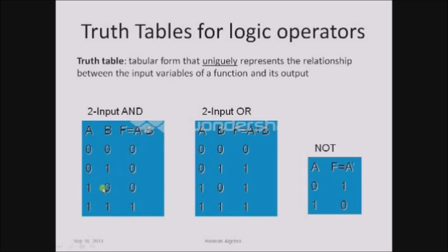The combinations are 0,0; 0,1; 1,0; and 1,1, and the output function values are 0, 0, 0, 1. If both a and b operands are one, then only the output becomes one. For the two-input OR gate, a and b are the input variables and the output expression is a OR b. The output of OR is one when both operands are one, or when any of the variables is one.